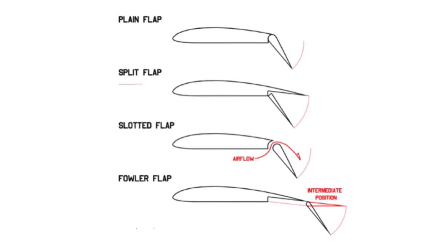Next we have the slotted flap. There is a gap between the flap and the wing which forces the high pressure air from below the wing over the flap, helping the airflow remain attached and increasing lift compared to a split flap. Any flap that allows air to pass between the wing and the flap is considered a slotted flap. Next we have the fowler flap, which is similar to a split flap but slides backwards before lowering, increasing the surface area of the wing and making it a highly efficient flap type.